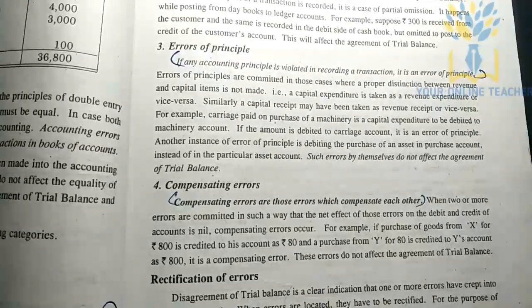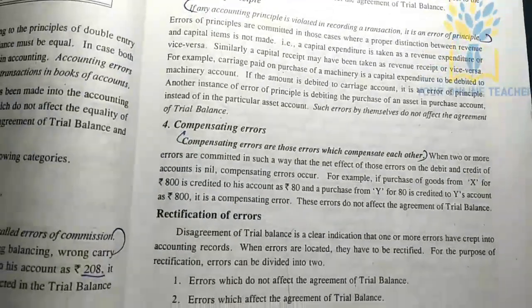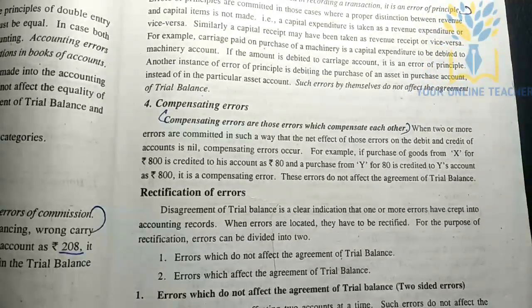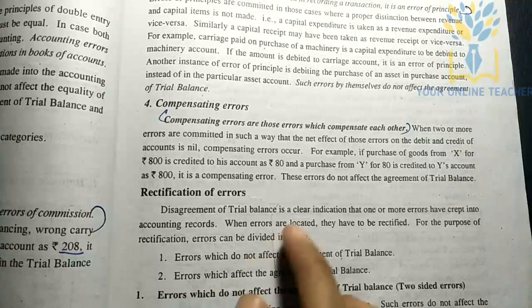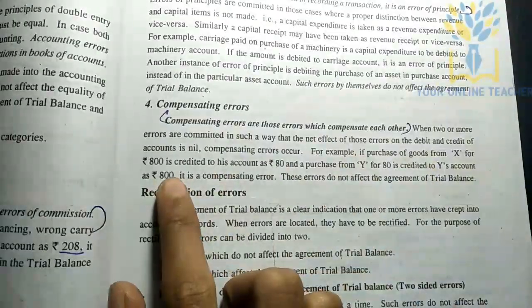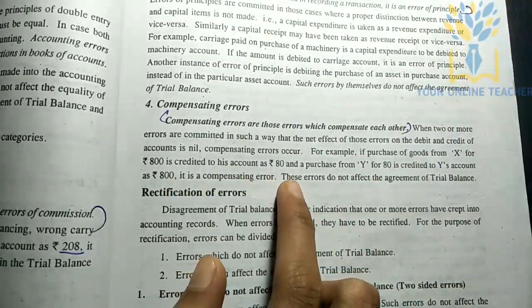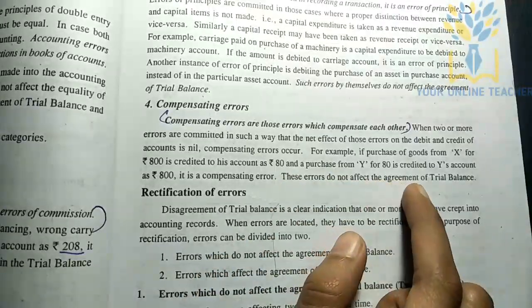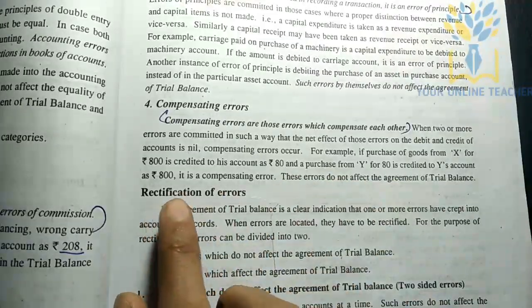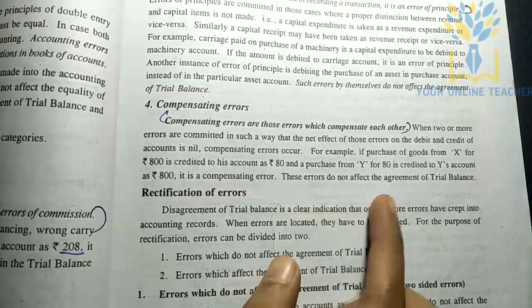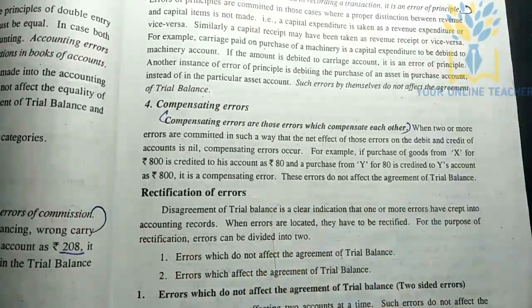Next is compensating errors. This is how errors compensate each other. For example, if purchase of goods from X for $800 is credited to his account as $80, and purchase from Y for $80 is credited to Y's account as $800, that is a compensating error. These errors do not affect the agreement of the trial balance.